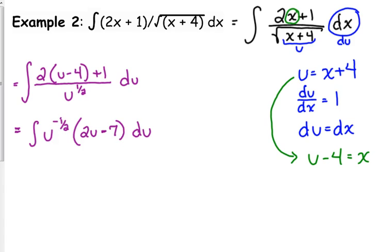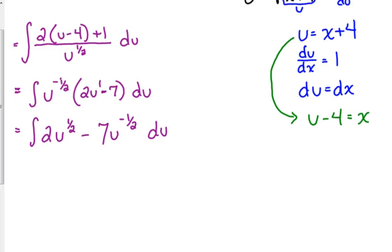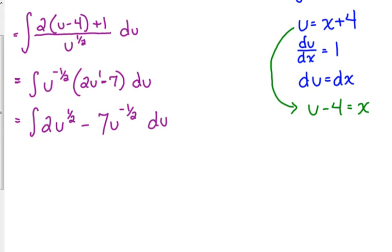Just like we did with the last problem, we want to distribute that u to the negative 1 half. So we've got 2u, and we multiply u to the negative 1 half by u, we add the exponent, so negative 1 half plus 1 is positive 1 half. And we multiply it by 7, so it's just 7u to the negative 1 half. Now we're finally to the point where we can integrate. So 2u to the 1 half. Okay, keep the 2, add 1 to the exponent, that becomes the 3 halves, flip it, and multiply, that's the 2 thirds. Minus 7, add 1, that becomes the 1 half, divide by the new exponent, it's a fraction, so we...